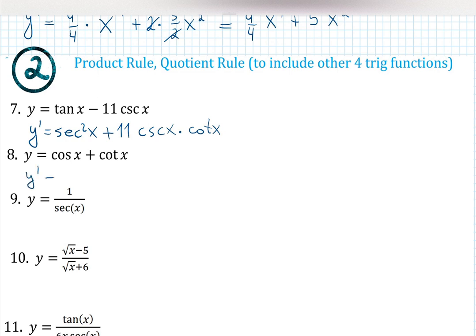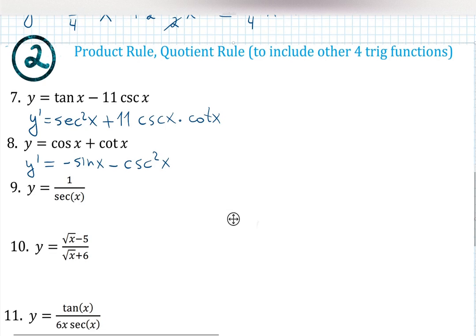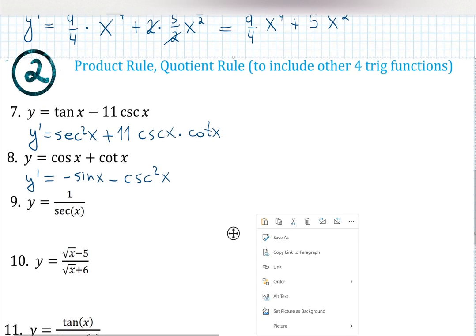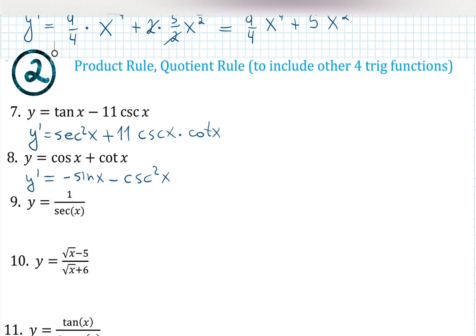The next one we can do right away. Derivative of cosine gives me negative cosecant squared x. I remember that tangent gives me secant squared x, so cotangent gives me negative cosecant squared x.